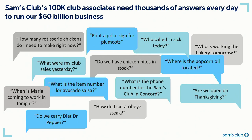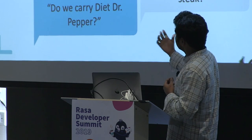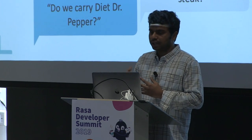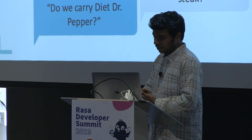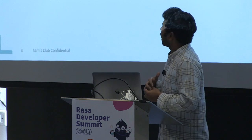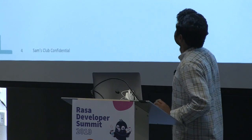To answer all these questions, people who work in the club have to go around the club to look for the information, or find an associate who knows the answer. Instead of having easy access to answer all these questions, it helps our ability to sell products and maintain good customer service. So we have Ask Sam — a virtual assistant that helps associates answer all these questions. Let's look at some use cases.